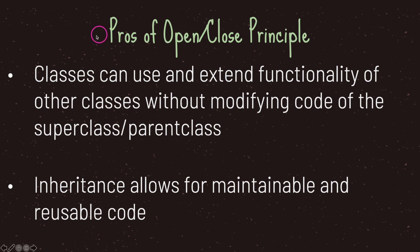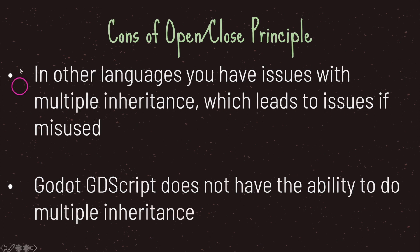The pros of the open and close principle are that classes can use and extend functionality from other classes without modifying the superclass, and inheritance allows for maintainable and reusable code. There are negatives — in other languages you may have issues with multiple inheritance, which leads to other problems if misused. Luckily, Godot's GDScript does not have the ability to do multiple inheritance, so we don't really have those issues.